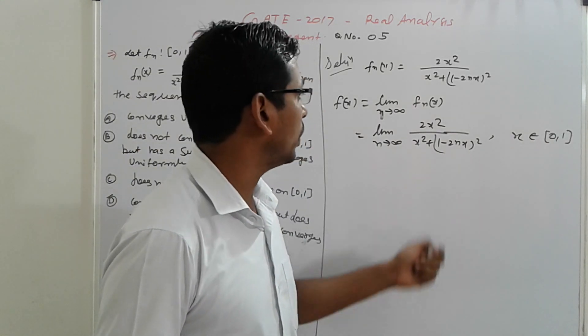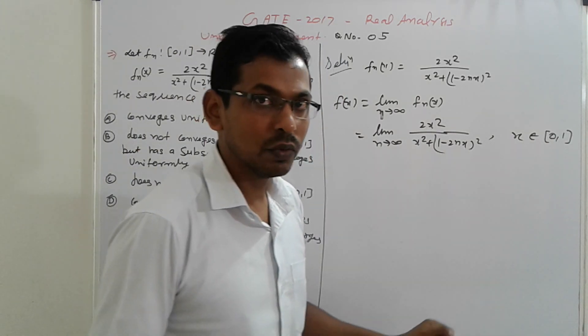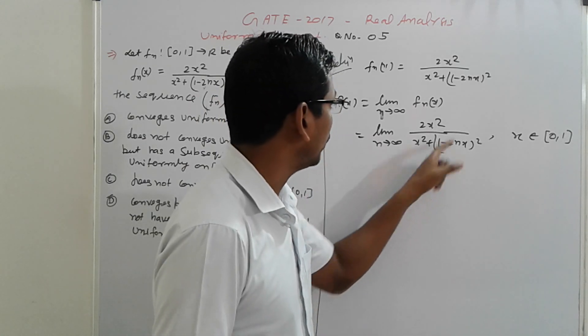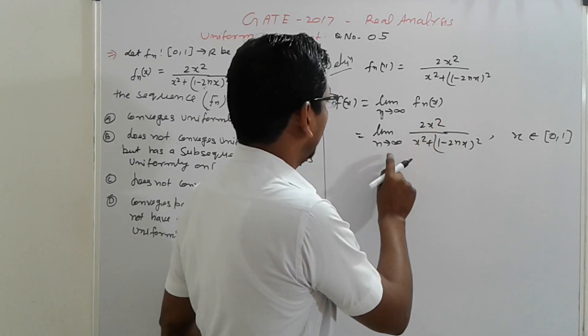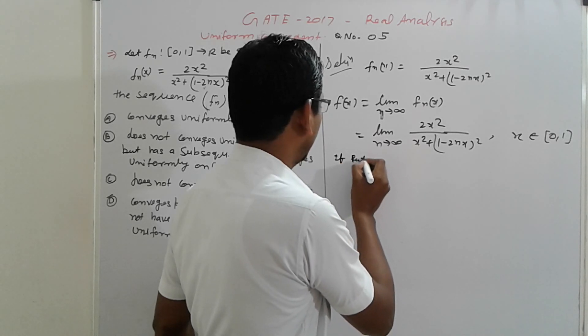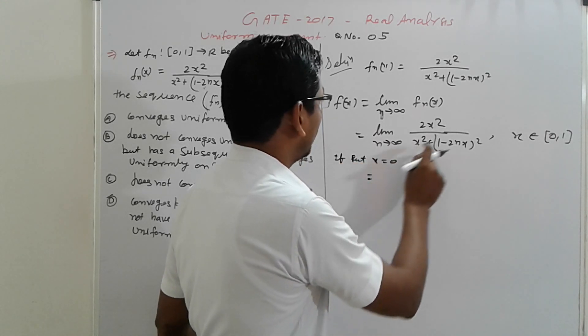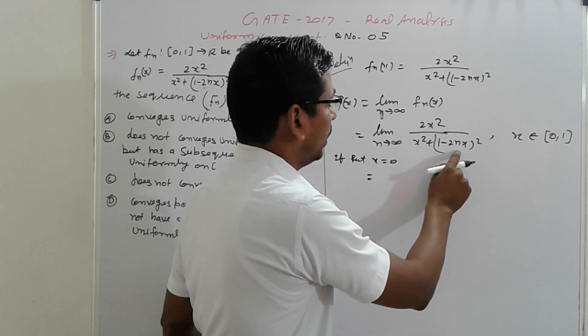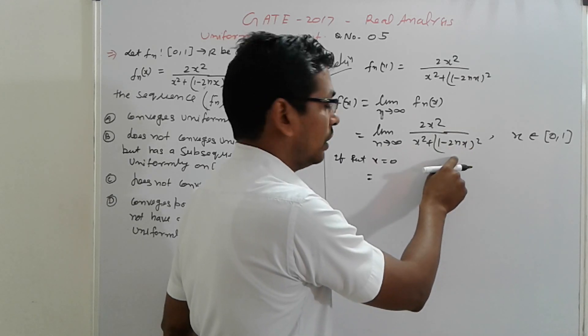So put all these values, first we check out, put x equal to 0. Put x equal to 0 here, if put x equal to 0, so we get here 0, here 0, here is also 0, 0 by 0 is 0.